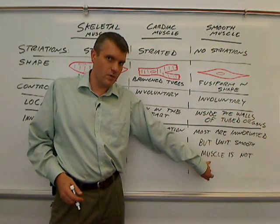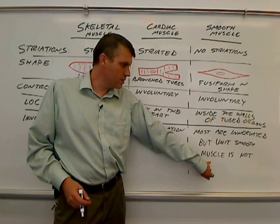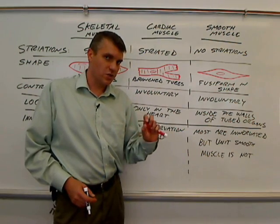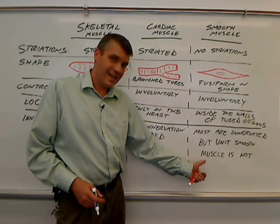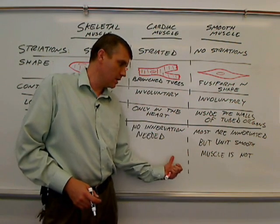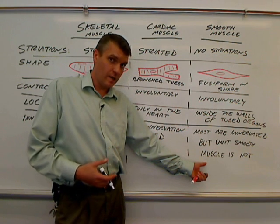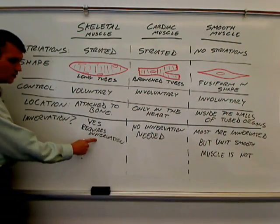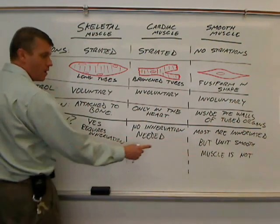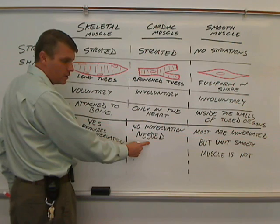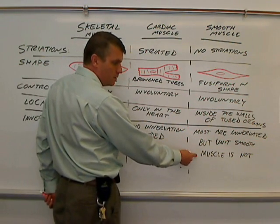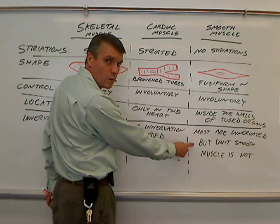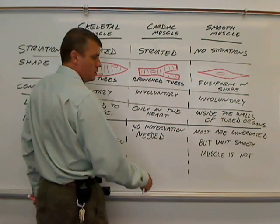Unit smooth muscle's control is similar to the control of cardiac muscle. Unit smooth muscle is found, for example, in the digestive tract, where waves of smooth muscle contraction move food along. Those waves happen spontaneously and auto-rhythmically, just like in the heart. The nervous system can speed that up or slow it down, but innervation is not needed for it to happen. So in terms of innervation: skeletal muscle — yes, it must have innervation; cardiac muscle — no innervation needed; smooth muscle — most are innervated, but some don't require it and can contract on their own. Yes, no, and sometimes.